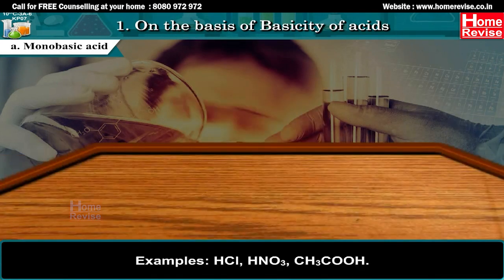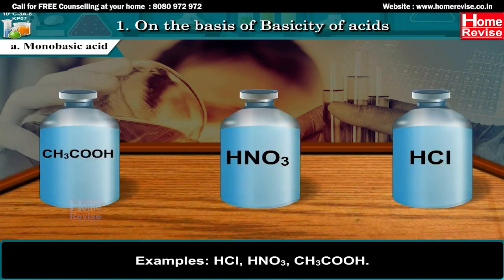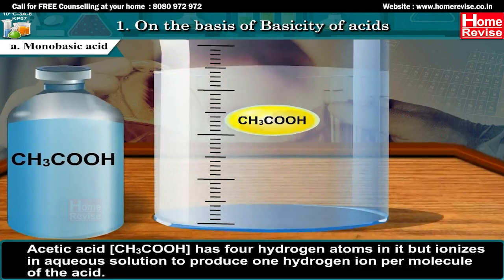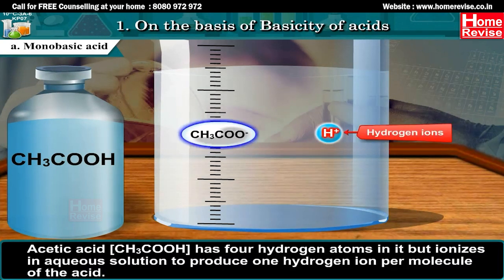Examples of monobasic acids: HCl, HNO3, CH3COOH (acetic acid). Note that acetic acid has 4 hydrogen atoms but ionizes in aqueous solution to produce only 1 hydrogen ion per molecule.